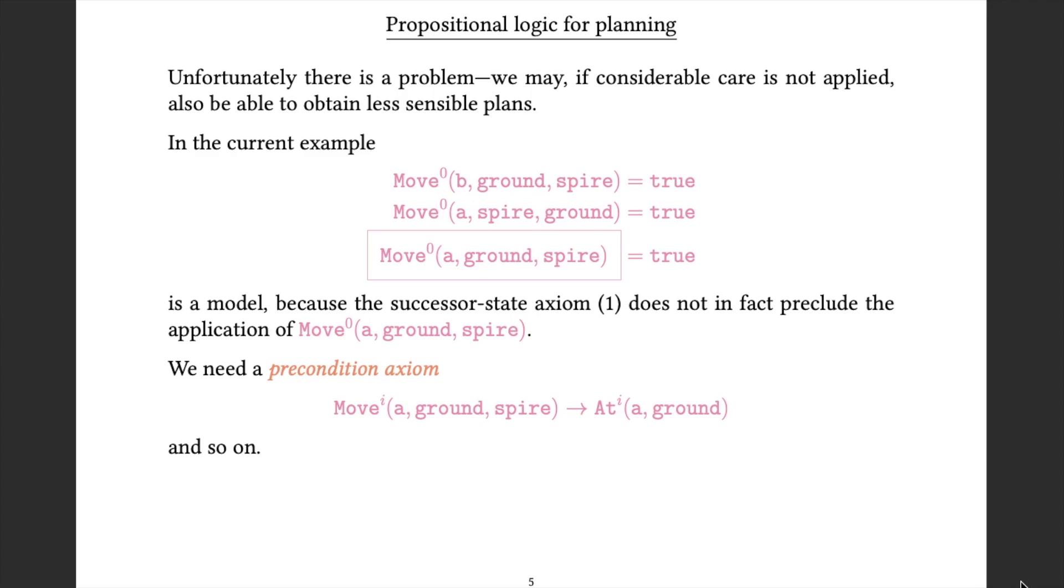So we may want to add a precondition axiom that says at any step i, if A is going to move from the ground to the spire, then A actually has to be at the ground to start with. And we would have copies of this for each of the relevant values of i.